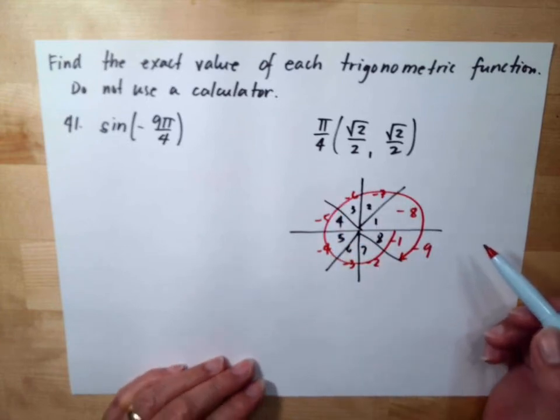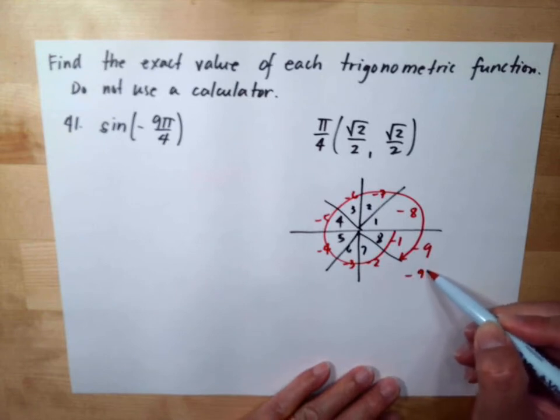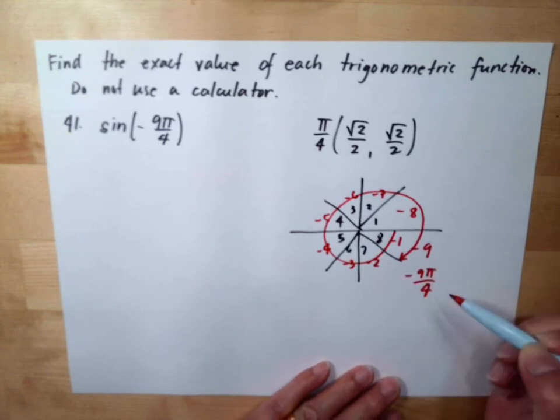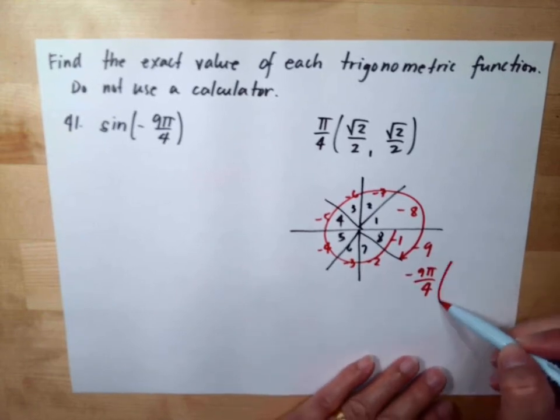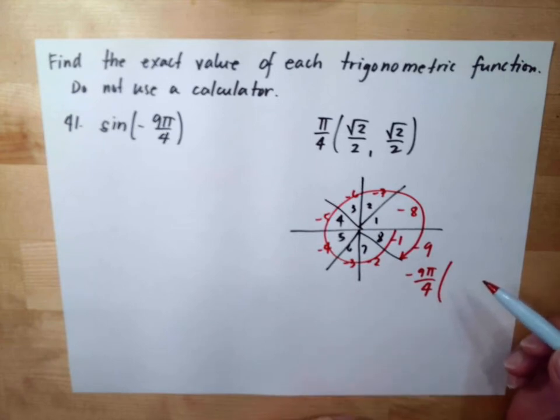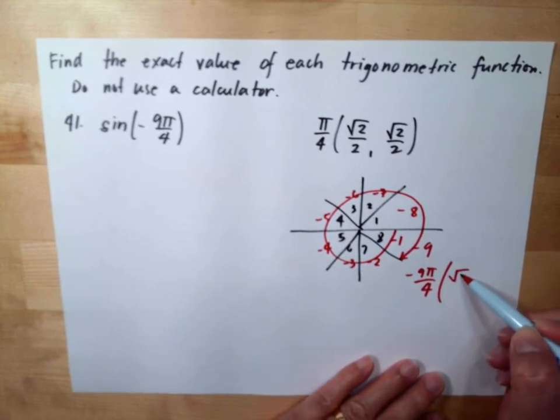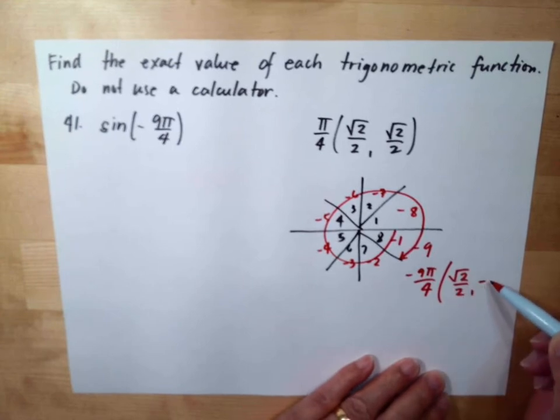So meaning negative 9π over 4 is in the fourth quadrant, and the coordinate for the fourth quadrant, the y will be negative. So we have square root of 2 over 2, and the y is negative square root of 2 over 2.